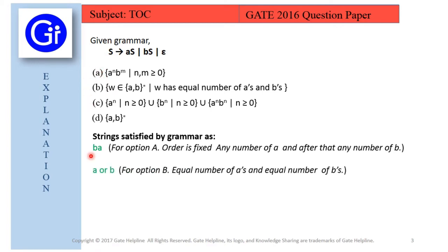Now we will see our second string: 'a' or 'b'. We can generate 'a' from this grammar as S → aS then S → ε, and similarly S → bS then S → ε gives us 'b' alone. But for option B, w belongs to {a,b}* with equal numbers of a's and b's, so a single 'a' or 'b' cannot be generated from option B. Therefore option B is also eliminated.